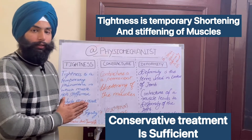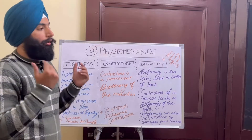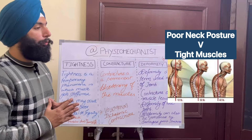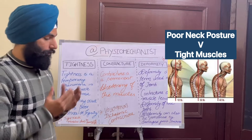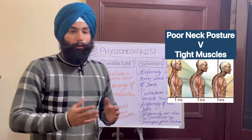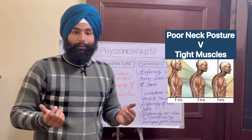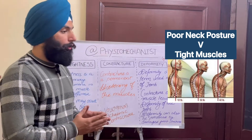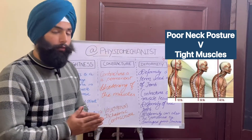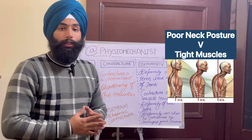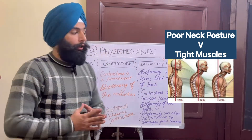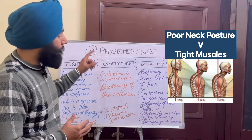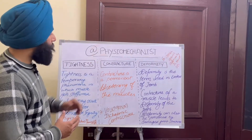The example of Tightness is tightened neck muscles due to poor neck posture. All of us nowadays have forward head posture because of prolonged use of mobile phones and laptops. So this was the example — now talking about Contracture.